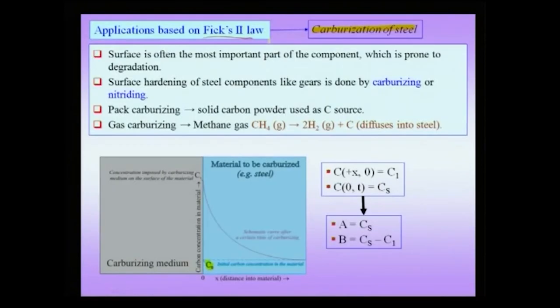The reason for carburizing is to achieve internal toughness along with surface hardness. The material (say 0.2% carbon) is exposed to a carburizing atmosphere—gaseous or solid—to build up surface carbon concentration. After carburizing, the material is slowly cooled, then reheated to high temperature and quenched, transforming the high-carbon surface into martensite. Since martensite hardness depends on carbon content, the surface hardness increases while the interior remains tough.